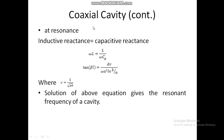To calculate the resonant frequency: at resonance, the inductive reactance of the two shorted coaxial lines in series equals the capacitive reactance of the gap. So ωL = 1 / (ωCg). Substituting both values and solving, we can calculate tan(βl) = dv / (ωa² × ln(b/a)), where v is the phase velocity.